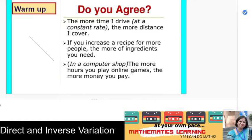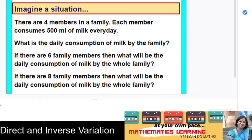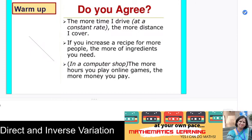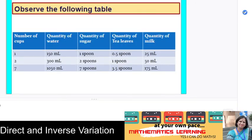Let us now look at a recipe example. Ingredients and quantities are listed for preparing tea. If it is one cup of tea, certain amounts of water, sugar, tea leaves, and milk are needed. As you increase the number of cups of tea, you need to increase the quantity of all ingredients.